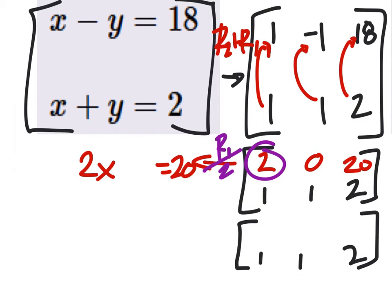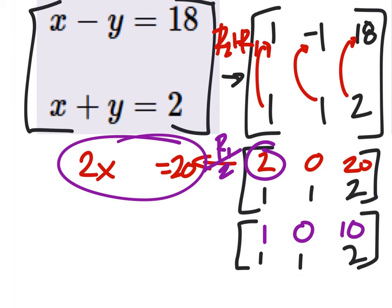It's still 1, 1, and 2. My top row, though, now is 1. 0 divided by 2 is still 0. 20 divided by 2 is 10. Just like as if we were to solve that equation right there, for x.